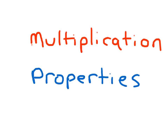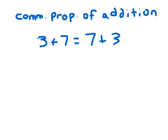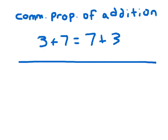In this lesson, we're going to learn about multiplication properties. Very similar to the commutative property of addition, where we have 3 plus 7 equaling 7 plus 3 — where the sum stays the same if we change the order of those addends — we have something very similar with multiplication. We also have the commutative property of multiplication.